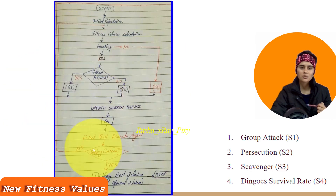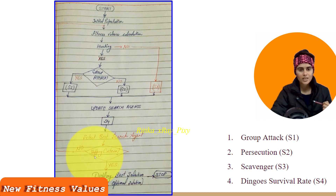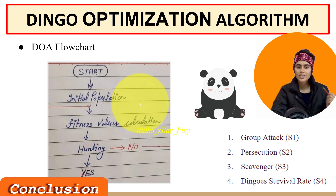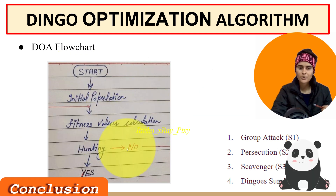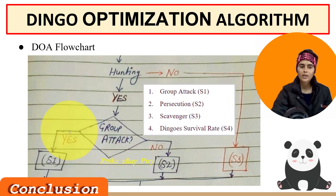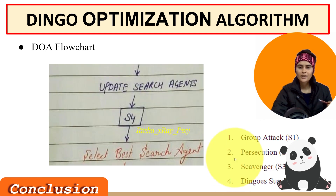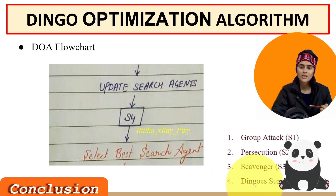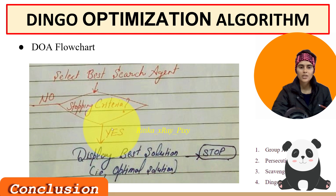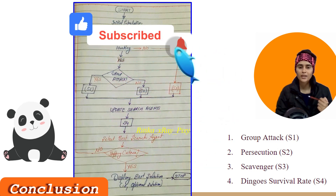After that we increment the counter and repeat the loop until the stopping condition is met. Once met, we display the best solution found in the last iteration. To summarize: initialize parameters, then population randomly, evaluate fitness values, check if hunting — if so, apply group hunting or individual hunt; if not, apply random walking. Update search agents, apply strategy four, check survival rate, select the best agent, check stopping condition — if met, stop and display the best solution; else repeat the loop. That's all about this video.